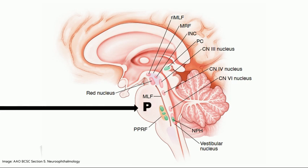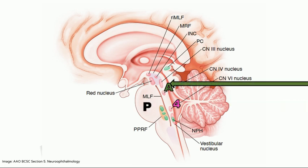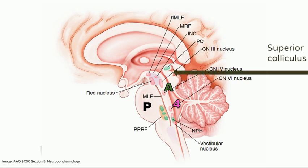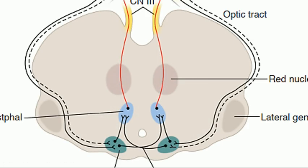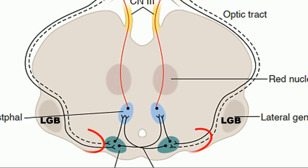Before tracing the afferent pathway, a brief orientation to the midbrain: this is the pons, this is the fourth ventricle, this is the cerebral aqueduct, and this is the superior colliculus, which along with the inferior colliculus is referred to as the tectum of the midbrain. Just rostral to the superior colliculus is the posterior commissure — a system of white fibers situated dorsal to the sylvian aqueduct in the most cranial portion of the midbrain. In cross-section at the level of the posterior commissure, the pre-tectal nucleus is situated ventral to the superior colliculus, with the posterior commissure lying dorsal to the sylvian aqueduct.